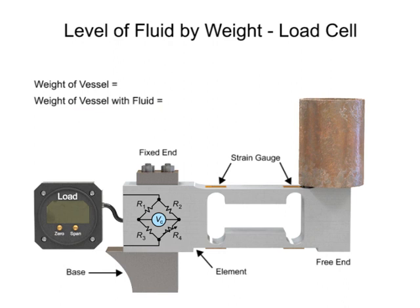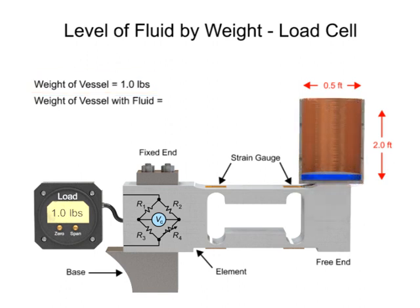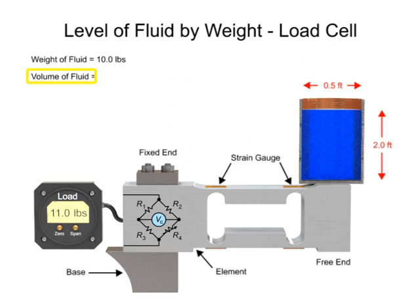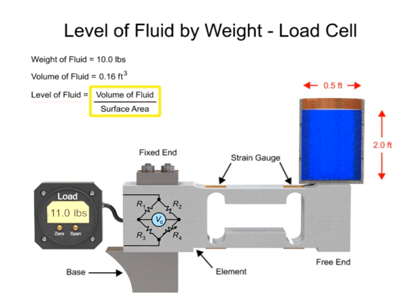As an example, to determine the level measurement of a column of water that is 2 feet tall with a diameter of 0.5 feet, the first step is measuring the weight of the vessel. The weight of the fluid is determined by subtracting the weight of the vessel from the weight of the vessel with fluid. The volume of the fluid is then derived by dividing the fluid weight by the density of the fluid. The level of the fluid is finally calculated by dividing the volume of the fluid by the surface area.